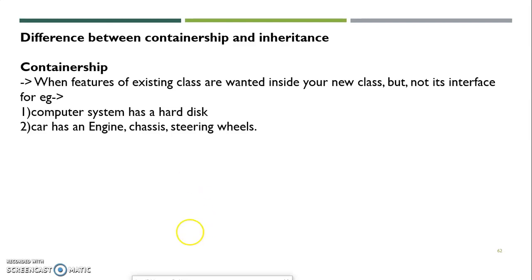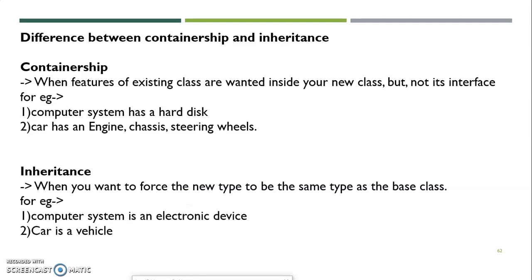The difference between containership and inheritance continues: inheritance is used when you want to force the new type to be the same type as the base one. So the derived class is of the same type as the base class. For inheritance: a computer system is an electronic device — electronic device can be a class whose derived class is computer. Car is a vehicle — vehicle is the base class and car is a subclass of the vehicle class.